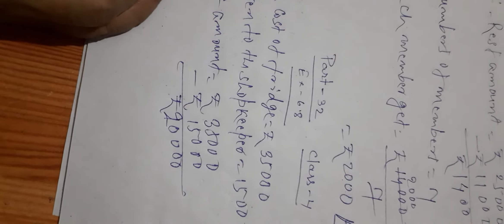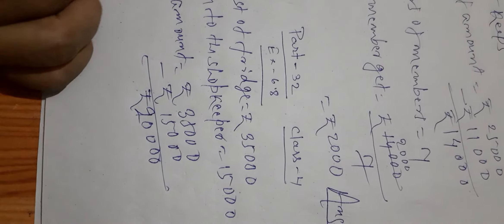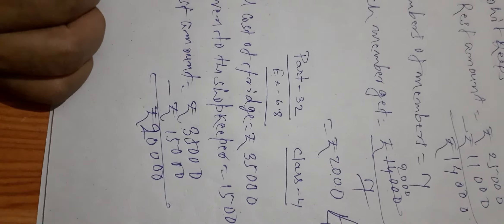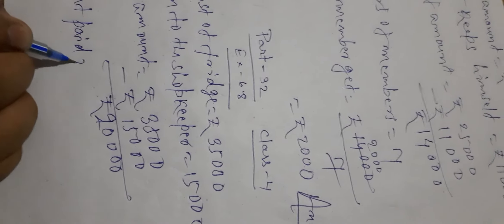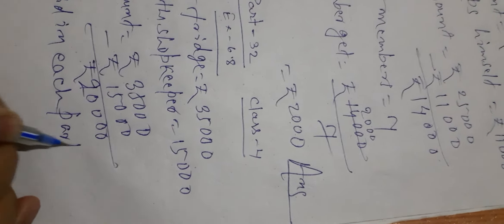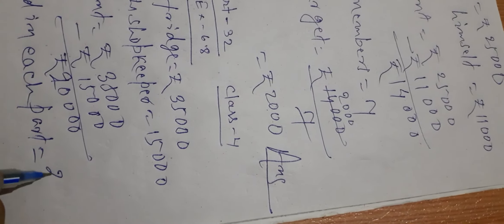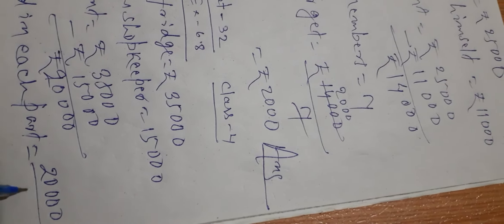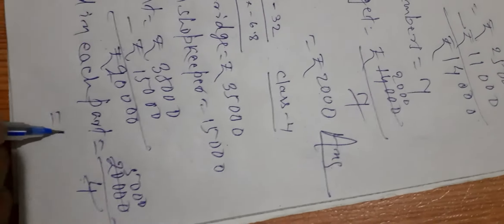The rest amount of Rs 20,000 is to be paid in 4 equal parts. So the amount paid in each part is 20,000 divided by 4, which equals Rs 5,000.